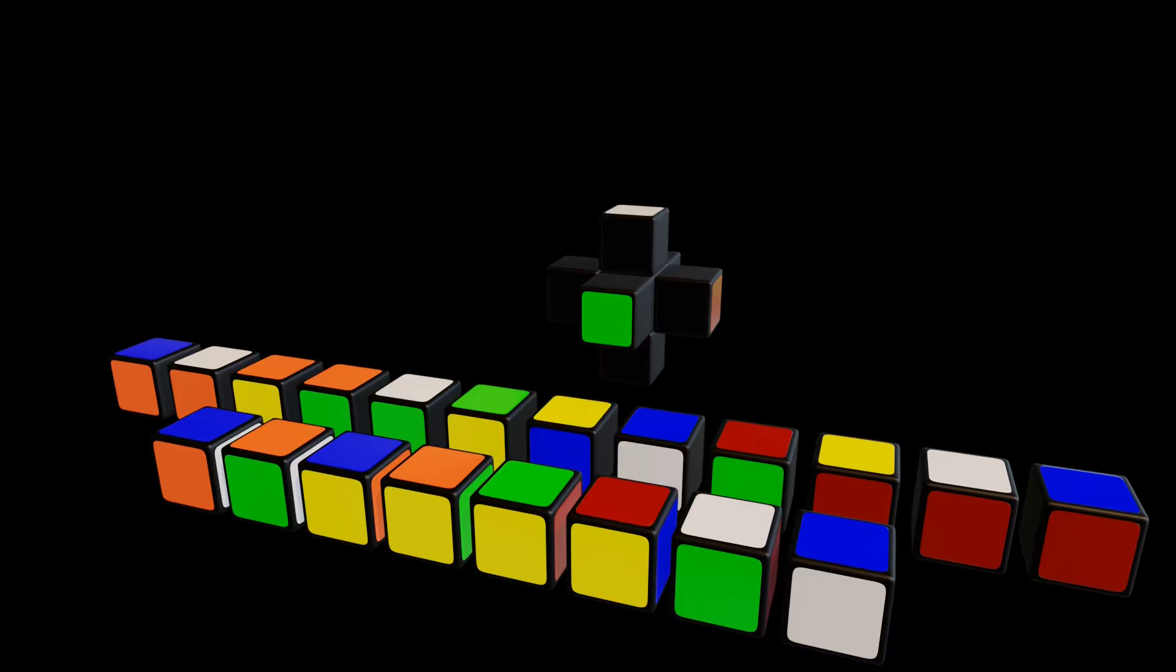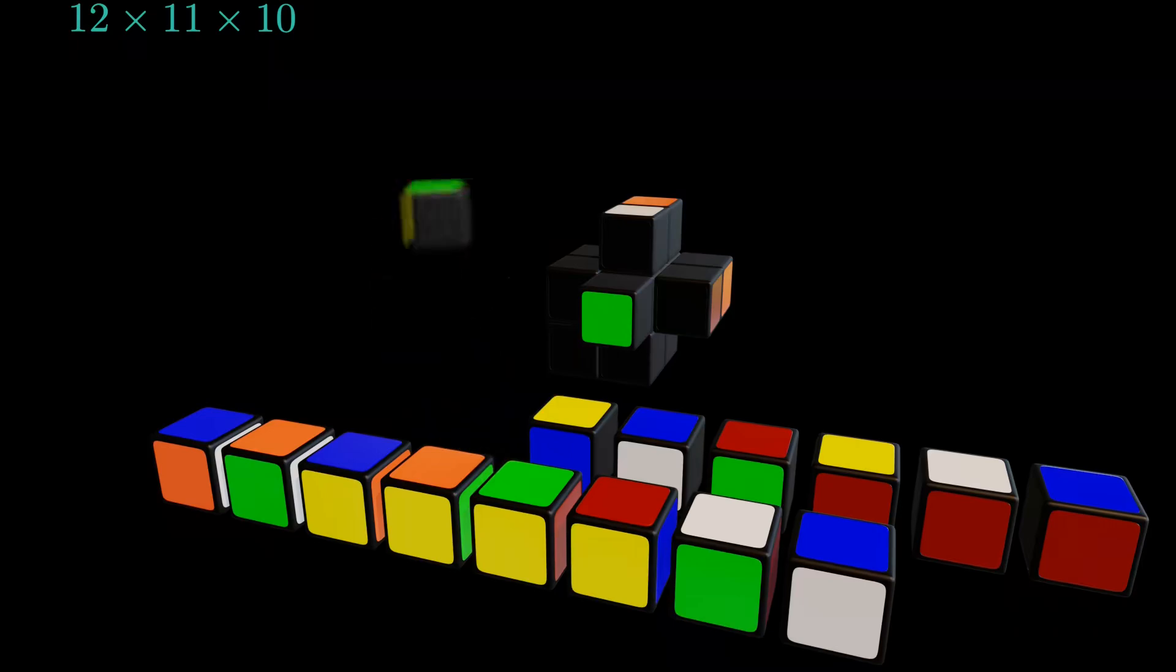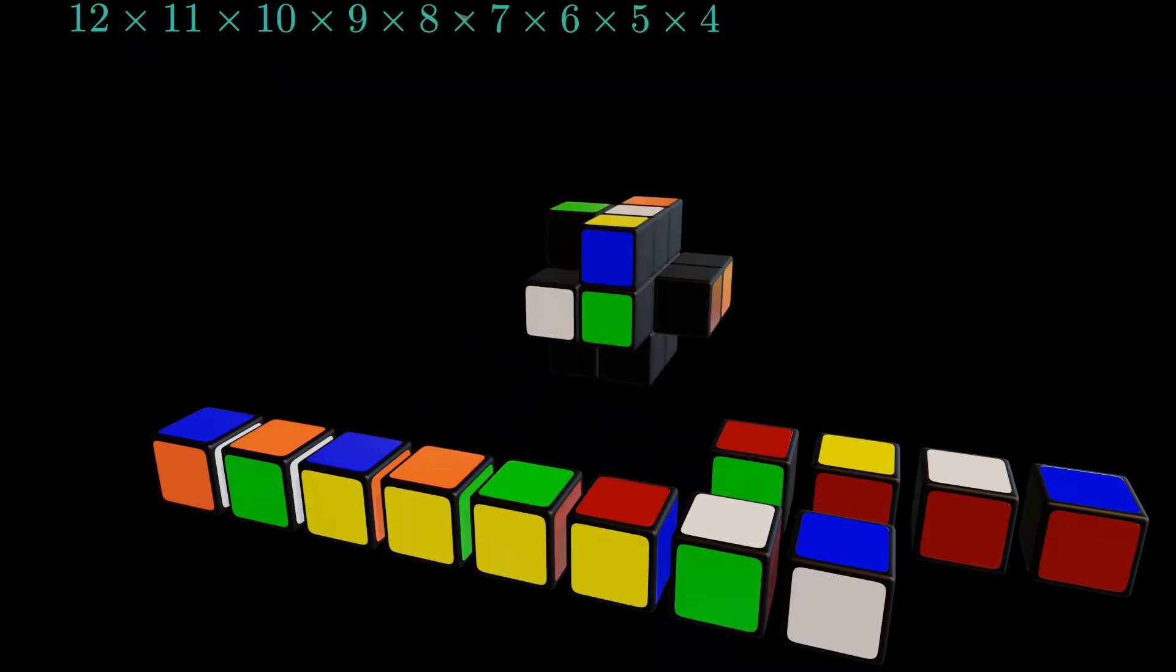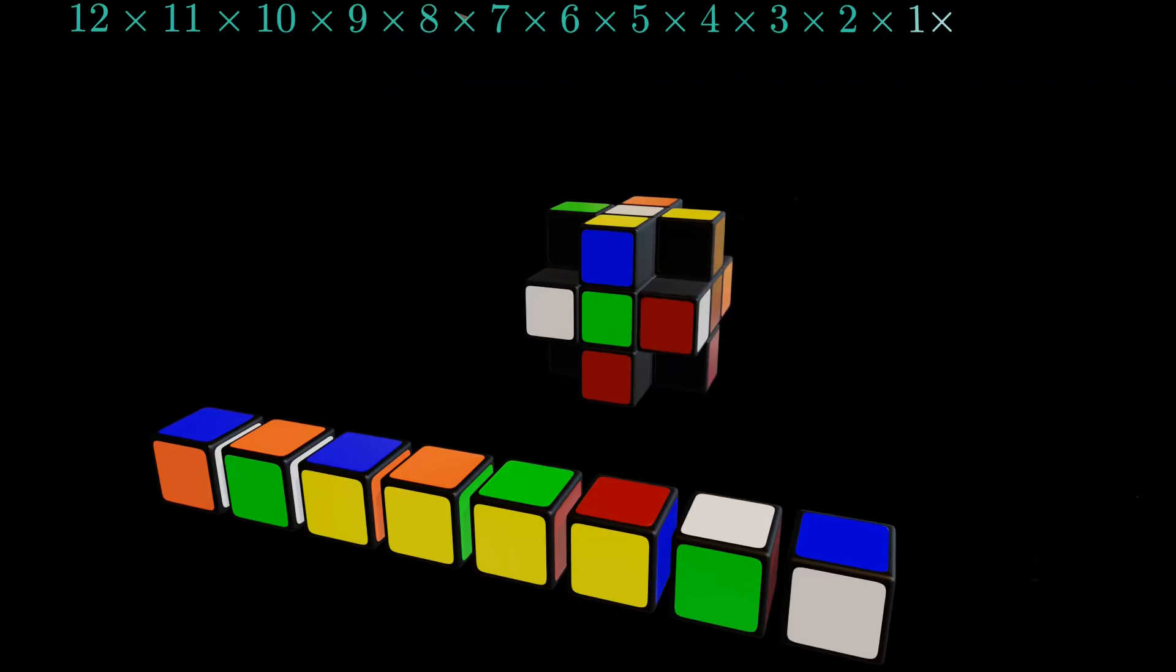Let's start by placing the edge pieces back into the cube. The first edge piece can go into any of the 12 available edge positions. Once it is placed, the second edge has 11 remaining slots to choose from, the third edge has 10 possible slots and this pattern continues until all 12 edges are positioned. This way we have found already 480 million configurations.